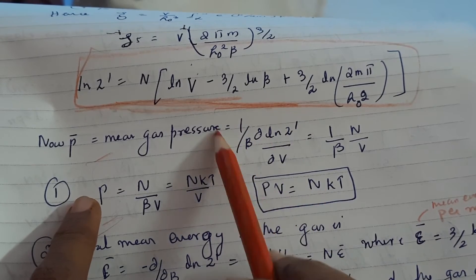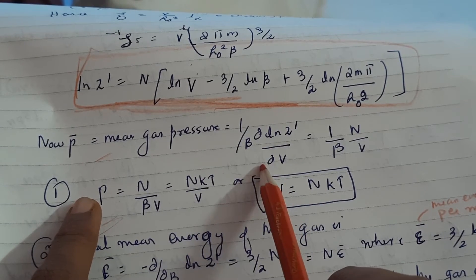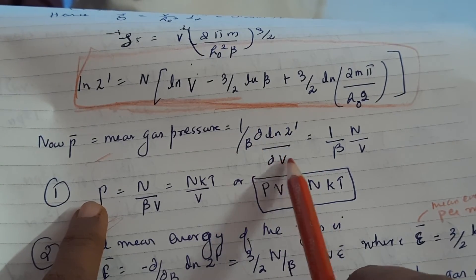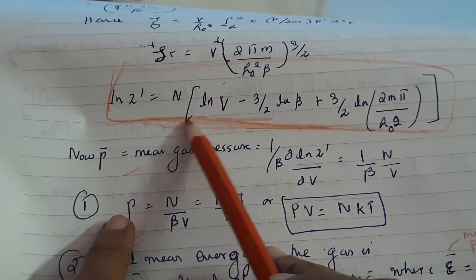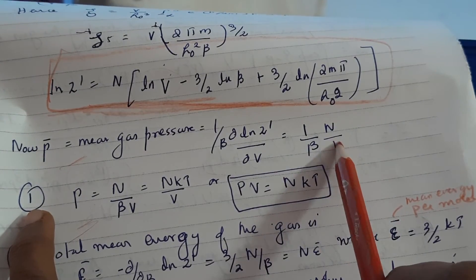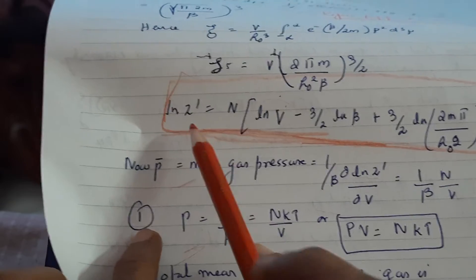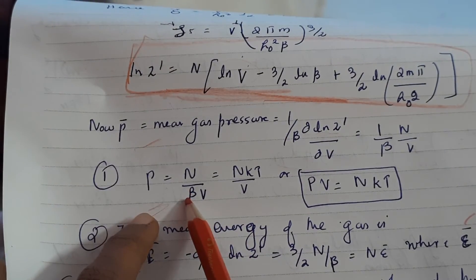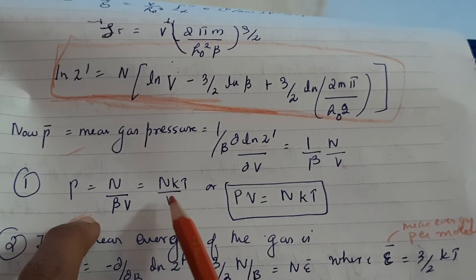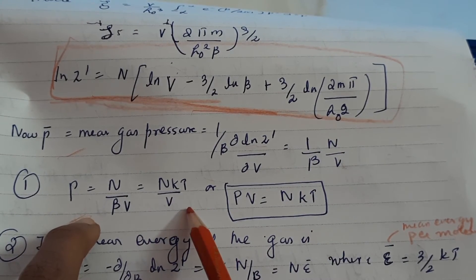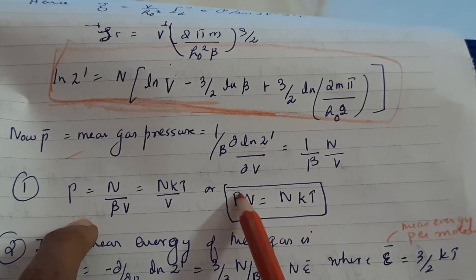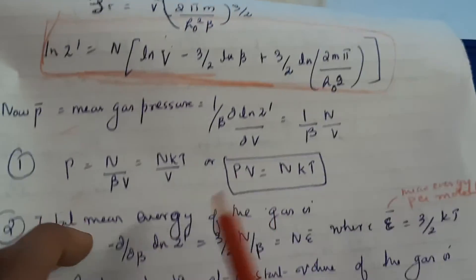This formula was derived in our previous lectures as a generalized force. Substituting ∂/∂V of ln Z, since only the volume term appears here, you get (1/β)(N/V). So P equals N/(βV). Since β equals 1/kT, we get P = NkT/V, and from this you get the famous equation PV = NkT.